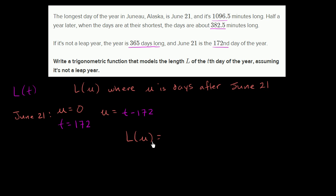So it's going to be some amplitude times cosine, times cosine of some coefficient B times U, plus some constant C that'll shift the entire function up or down. So this is the form that our function of U is going to take, and now we just have to figure out what each of these parts are.